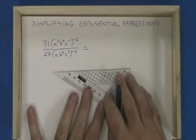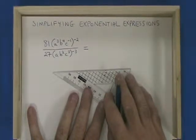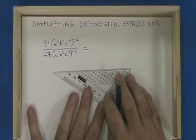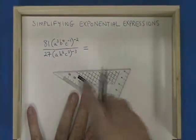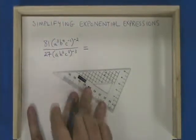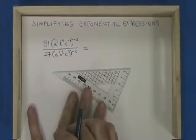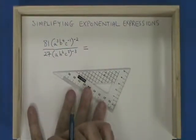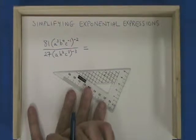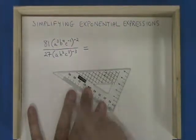This video will illustrate how to simplify exponential expressions. The first step when simplifying exponential expressions is that whenever you see a number like 81 or 27 that can be expressed as a simpler base to an exponent, you should convert it into its base-exponent form.